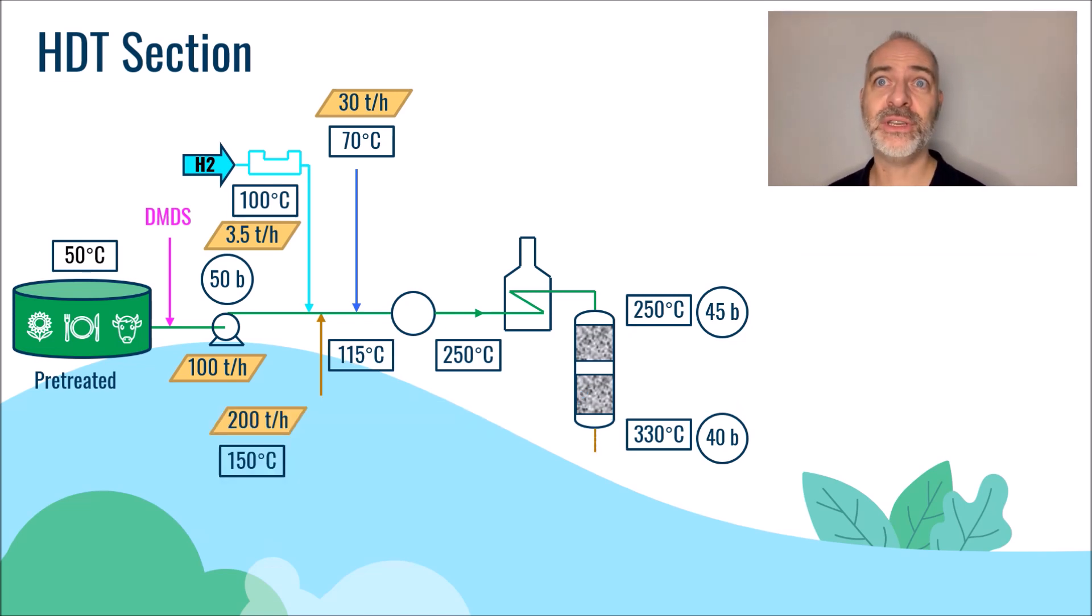When leaving the reactor, the effluent is cooled down by taking advantage of its calories at high thermal level by heating the feed. The effluent is cooled down to about 215 degrees C.